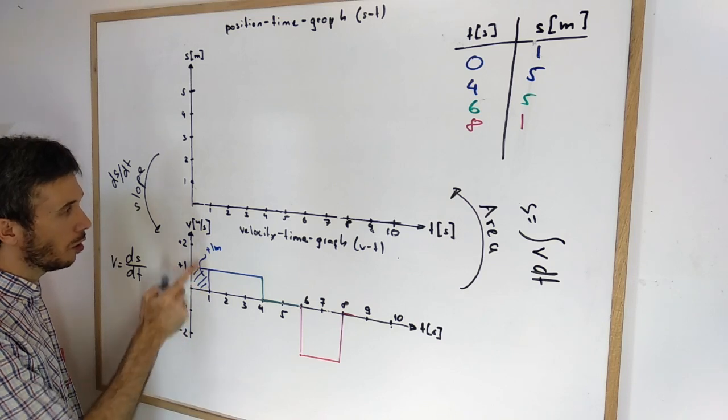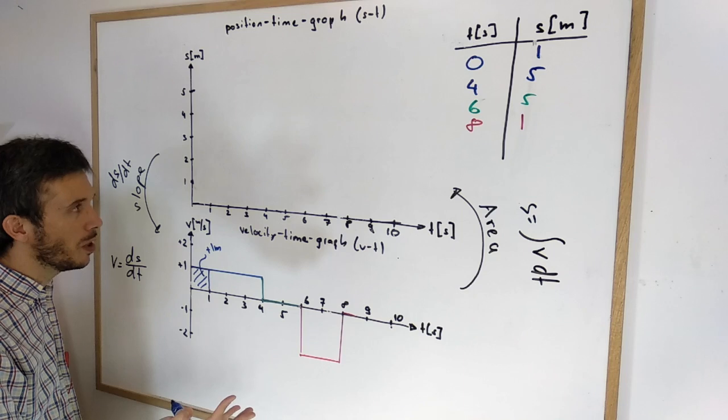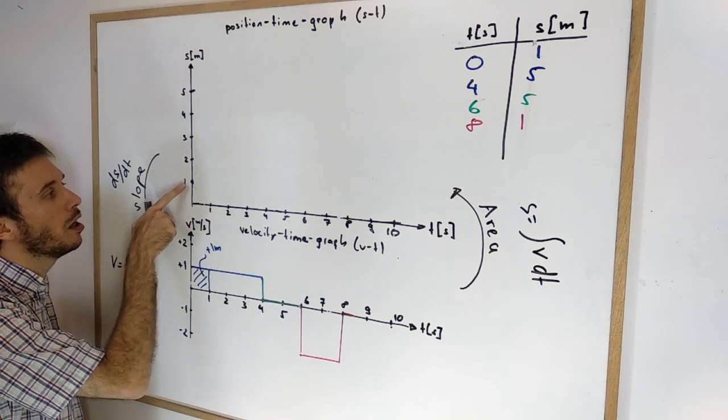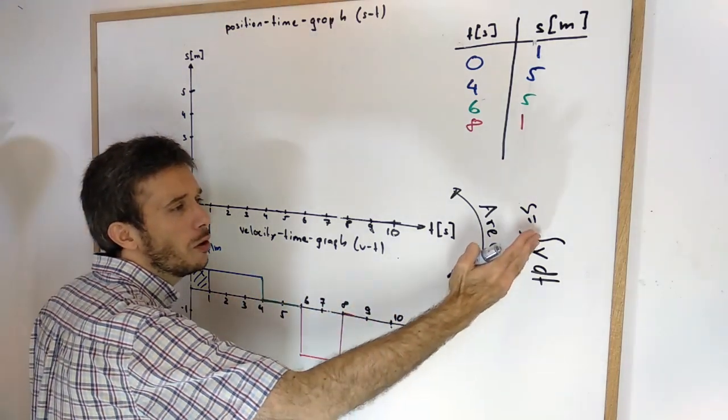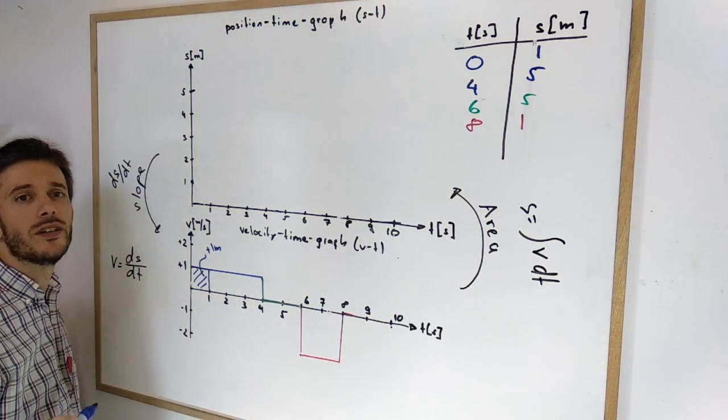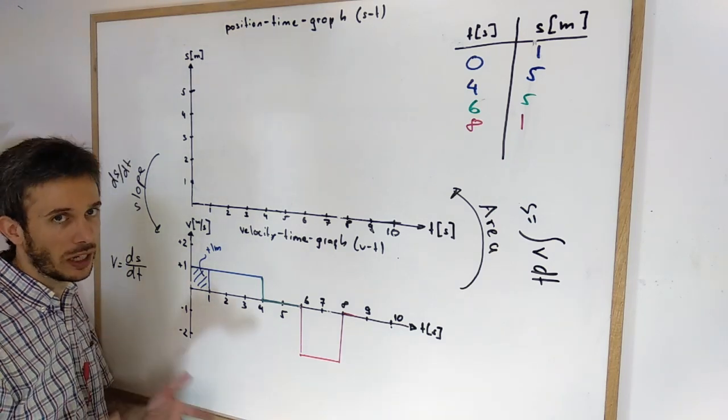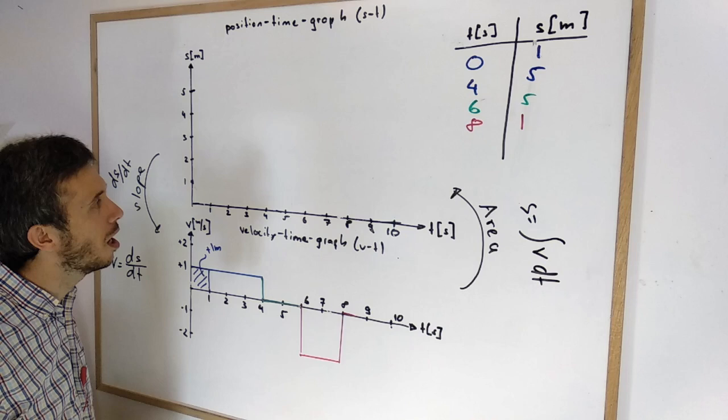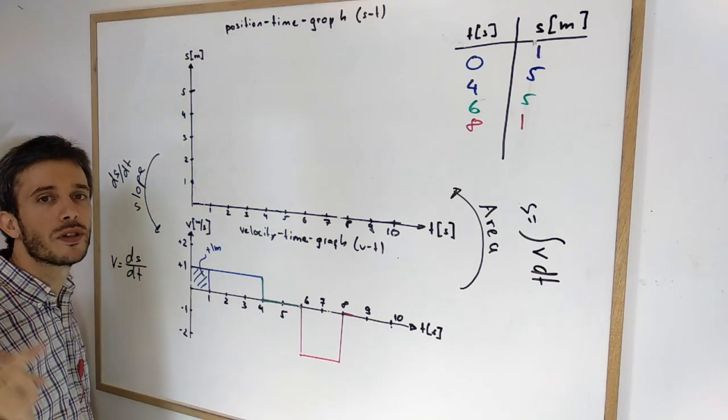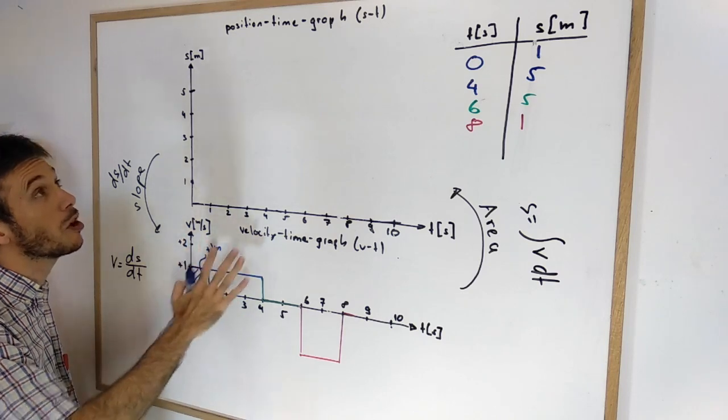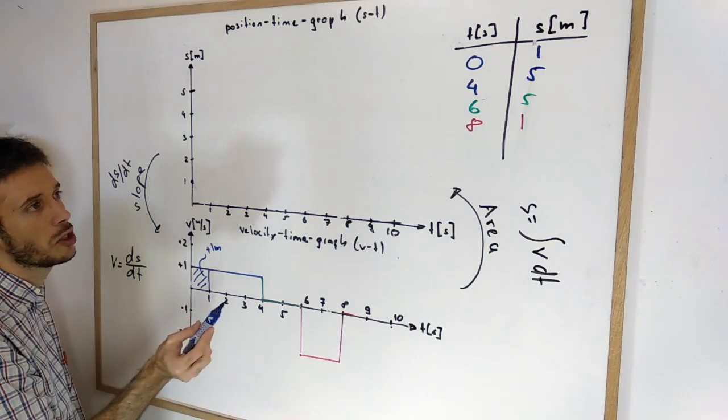That means we know from 0 to 1 seconds we advanced by 1 meter. Now the problem is that doesn't tell us where to start. Those of you that took calculus know if you do an integration, there's always an integration constant plus c. That sometimes you forget because it's just plus c in math. But it actually has a meaning in physics. In this case it is the initial position. So in order to be able to draw the position time graph from the velocity time graph, you need to know the initial position.